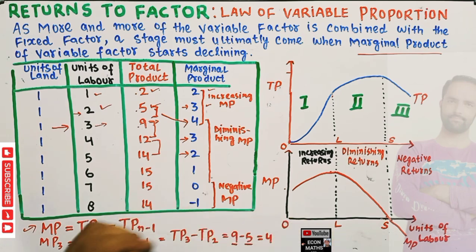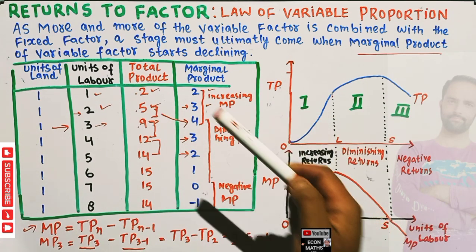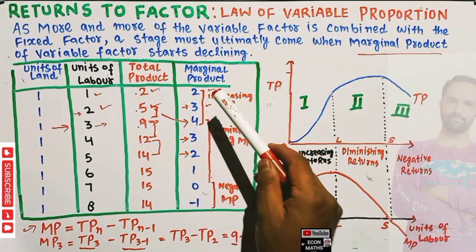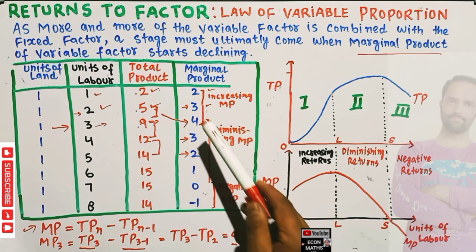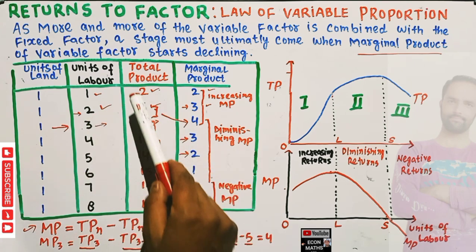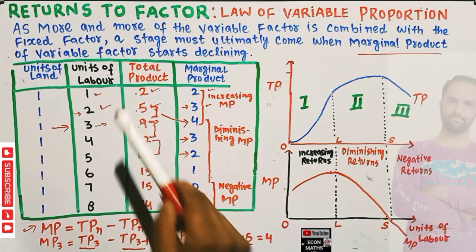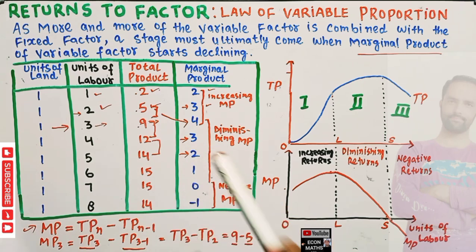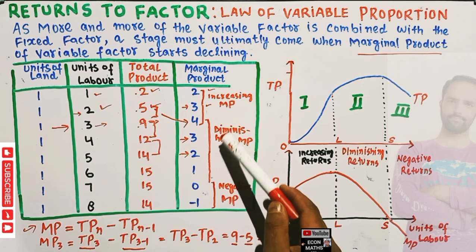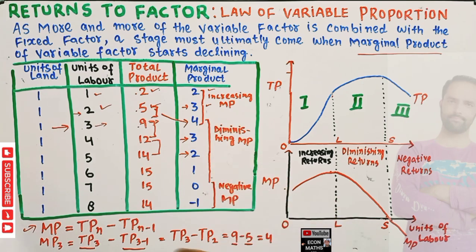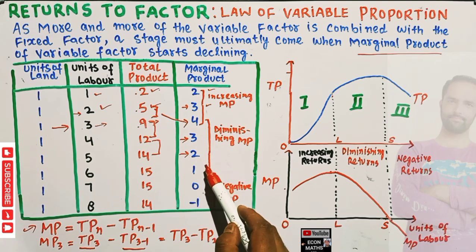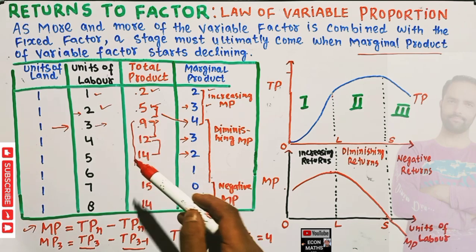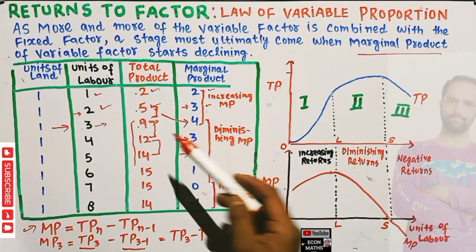If we transpose this graphically: when marginal product is increasing — here you can see it increases from two to three to four — our total product is also increasing at an increasing rate, from two to five to nine. Then when marginal product starts decreasing — from four to three to two to one — our total product is still increasing but at a diminishing rate, from nine to twelve to fourteen.